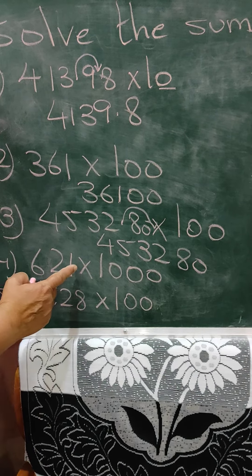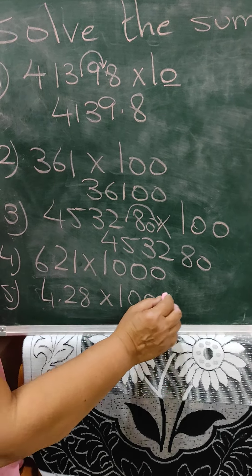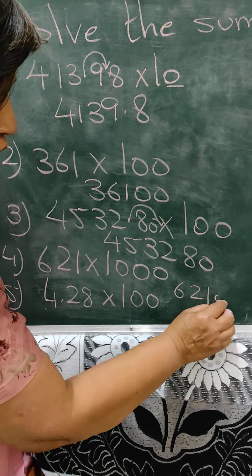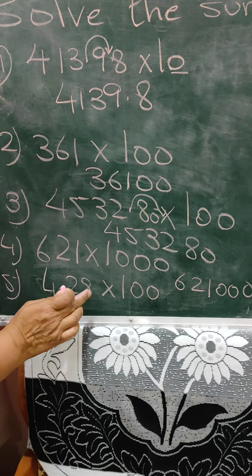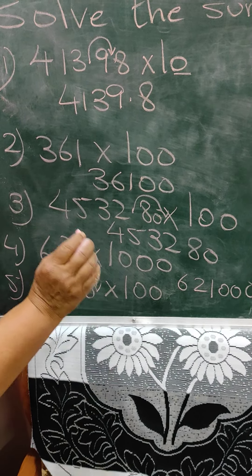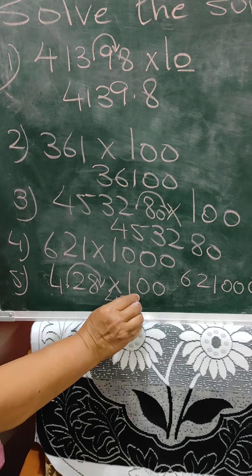Ten means shifting by one point to the right side. Again, I am telling you right side. So 4139.8. Now here there is no decimal point, so consider the decimal point at the end. So 361 shifting of two decimals means 36100. Here again, there is only one decimal point here, but the zeros are two. So you have to shift two places. So you have to add one zero here. So the answer will be 453280. Here there is no decimal point, so consider it to be at the end. And then 621 shifting of three digits means you are putting three zeros. And here, again there are two decimal points and two zeros. So shifting is like this. So the answer will be 428.